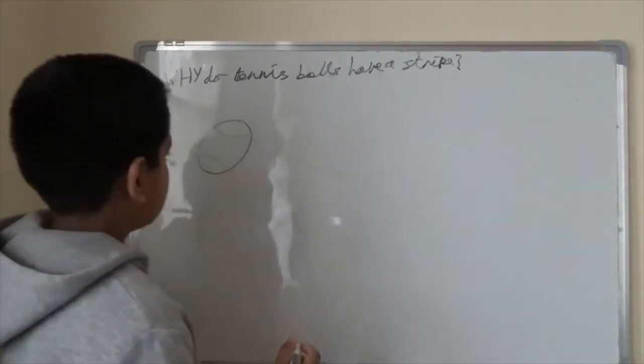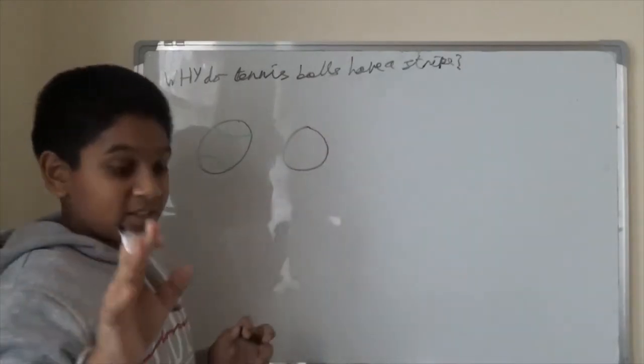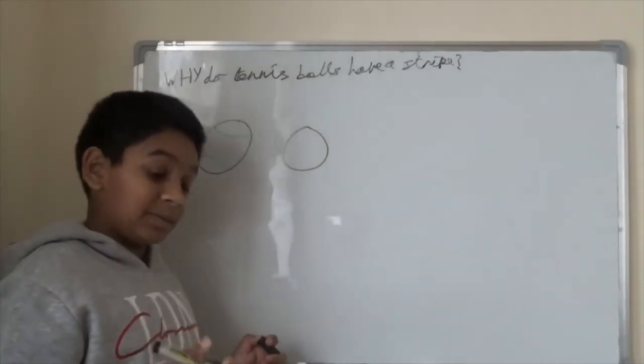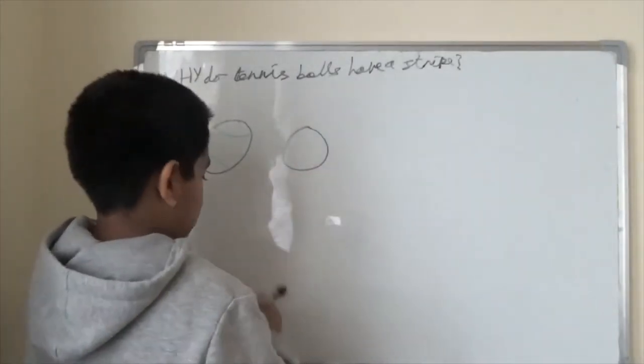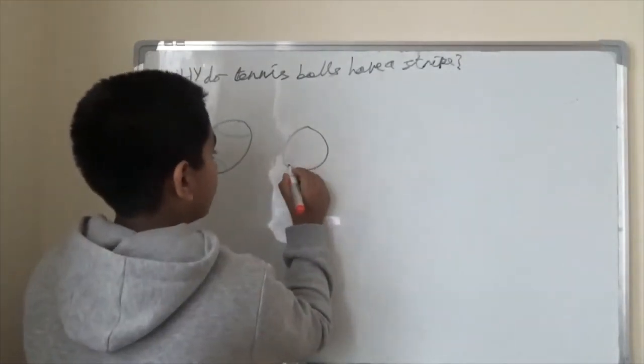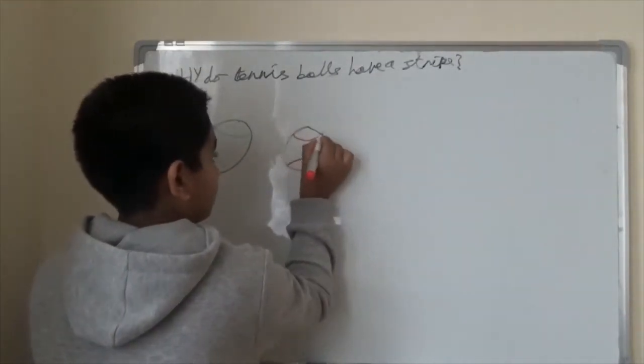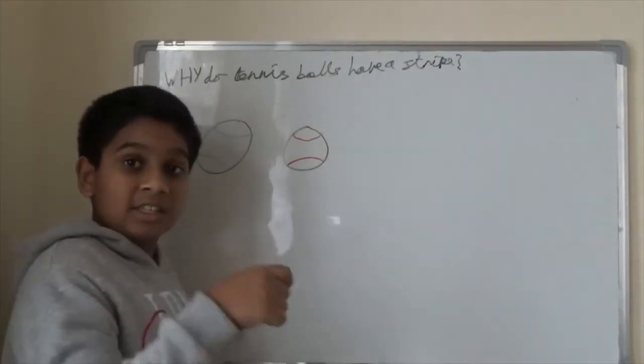So the thing is, on the baseballs, I'm actually telling you about the baseball because it's similar to the tennis ball. The baseballs have red ones. They don't have red stripes though, they have red stitches.